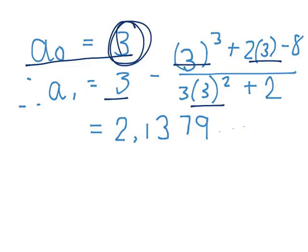For a2, you're going to do exactly the same thing, except everywhere that you put 3 the last time, you're now going to put 2.1379. And you put that in your calculator, and you get 1.7530.